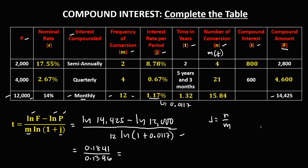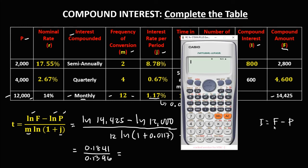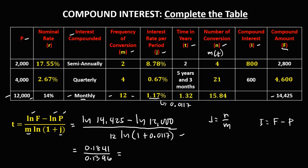To solve for the compound interest I, I equals the compound amount minus the principal. So 14,425 minus 12,000 equals 2,425. Therefore the compound interest is 2,425. This is how to solve for compound interest.